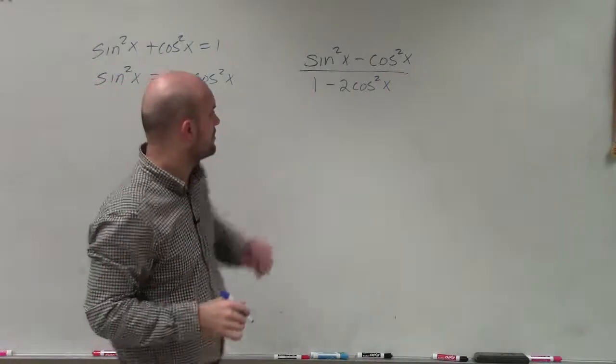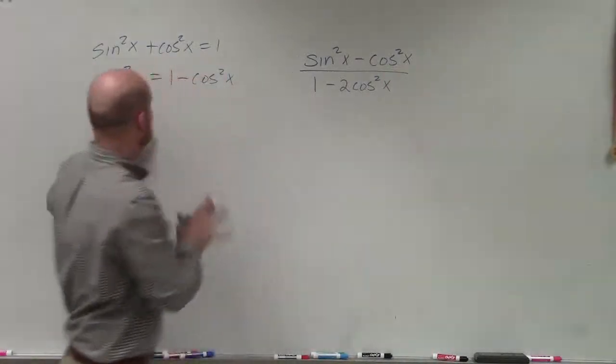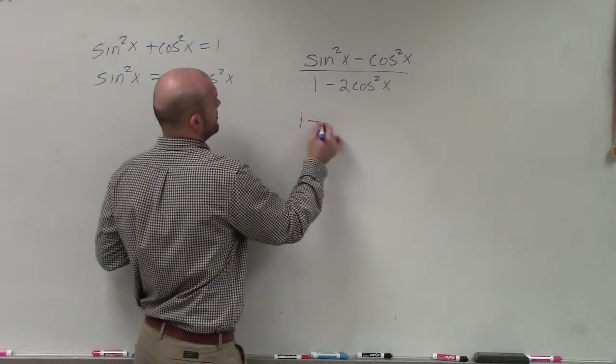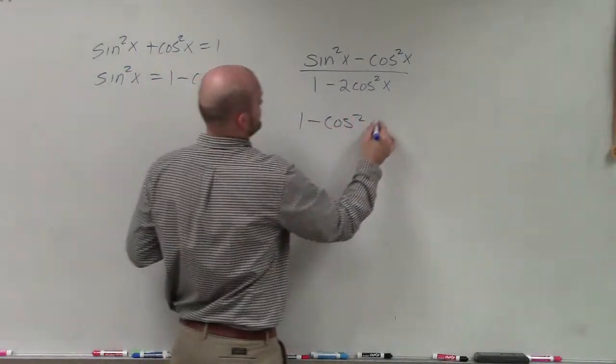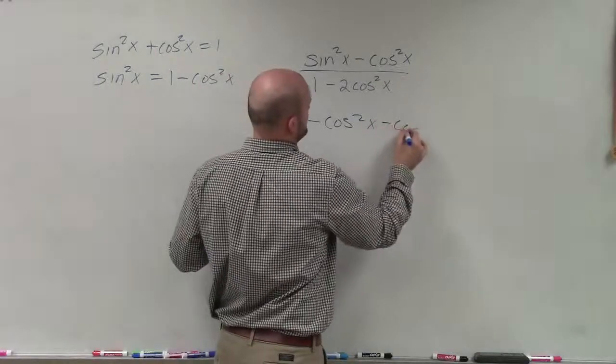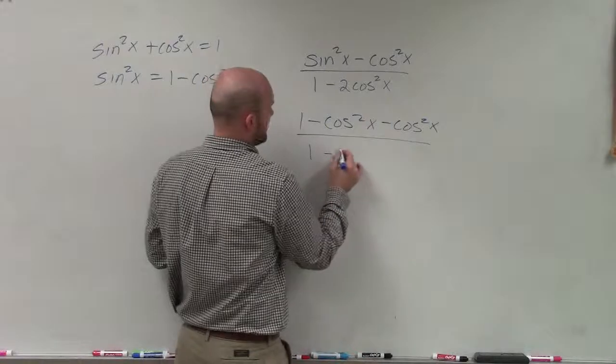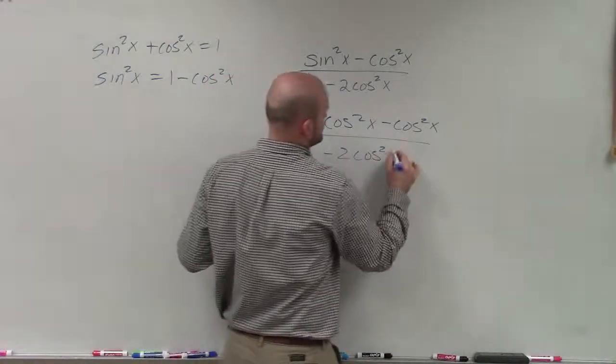So therefore, what I'll do is I'll go ahead and substitute sine squared of x in for 1 minus cosine squared of x. So I have 1 minus cosine squared of x minus cosine squared of x, all divided by 1 minus 2 cosine squared of x.